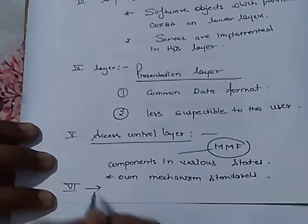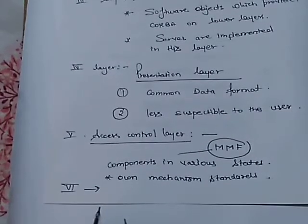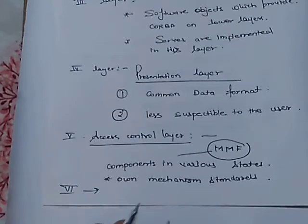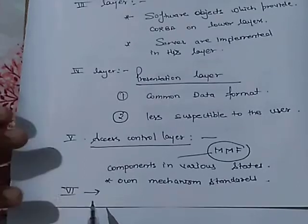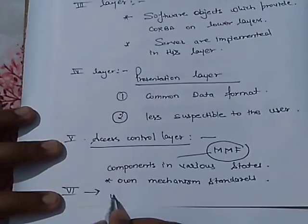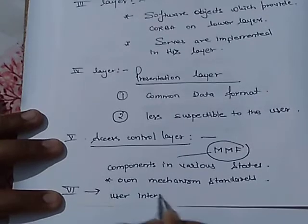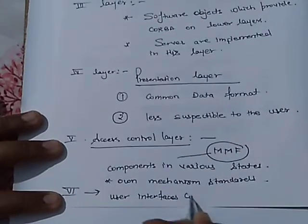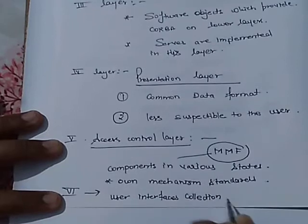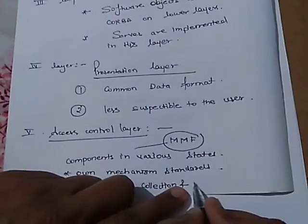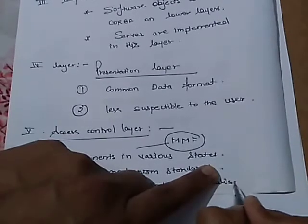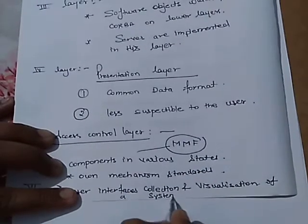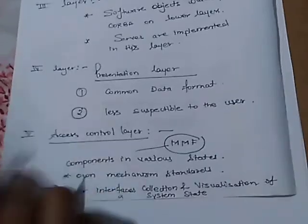The last layer is the application layer, known as the top layer. This layer deals with the collection of user interfaces and the visualization of system state.